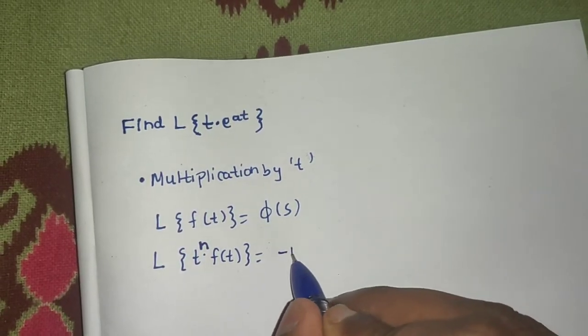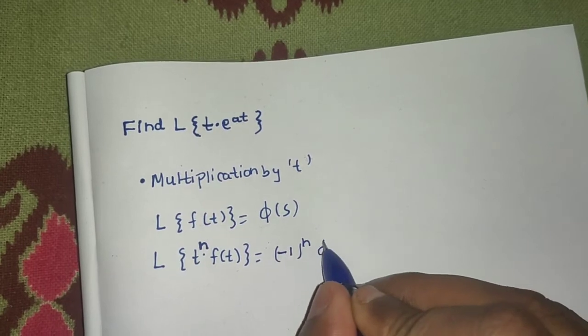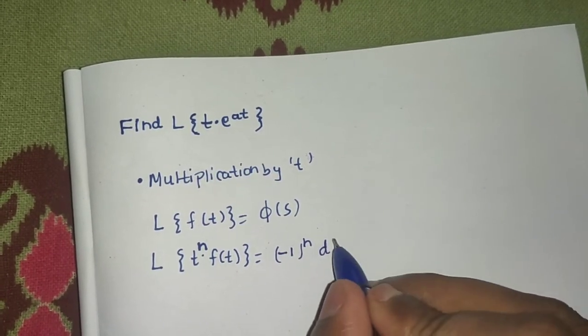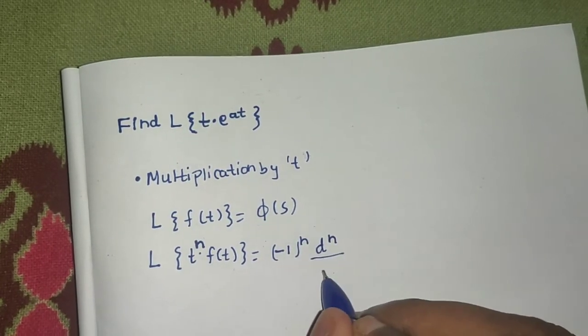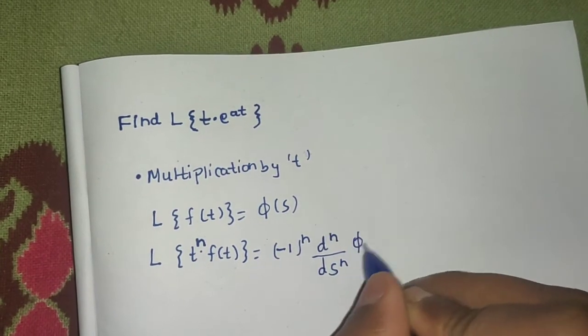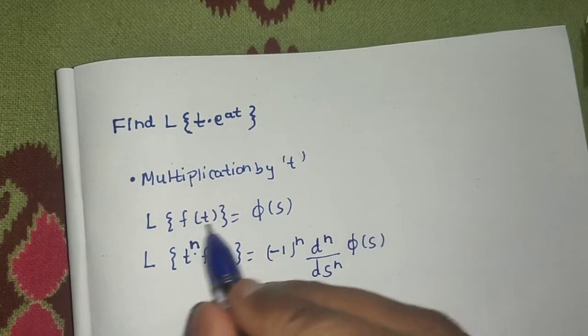That is minus 1 power n, nth derivative with respect to s. So, d n by d s power n of what? Of phi of s. Here phi of s is the Laplace of ft.